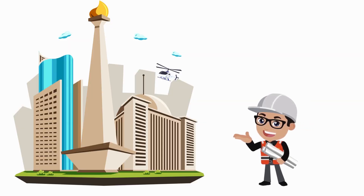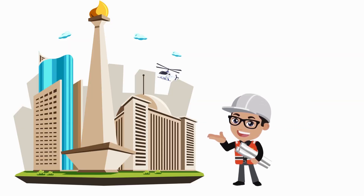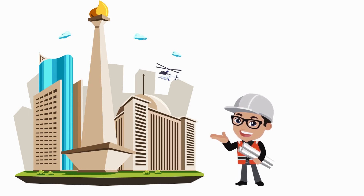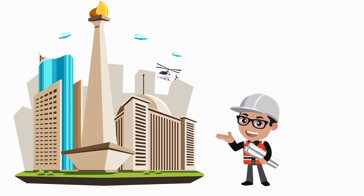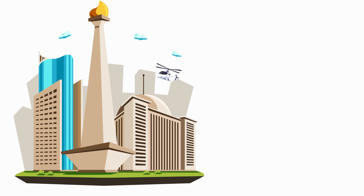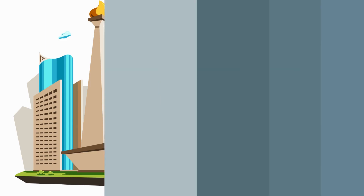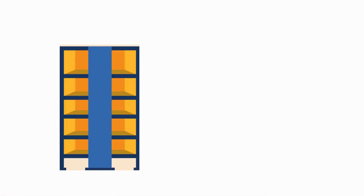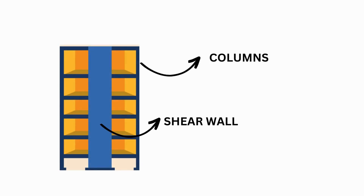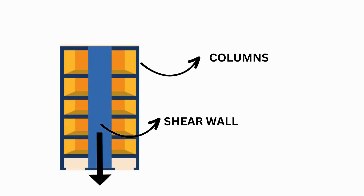In the realm of structural engineering, buildings are more than just steel and concrete. They are carefully designed systems that must withstand various forces, such as wind, earthquakes, and even their own weight. Shear walls and columns play a vital role in distributing these forces and ensuring the stability of the structure.